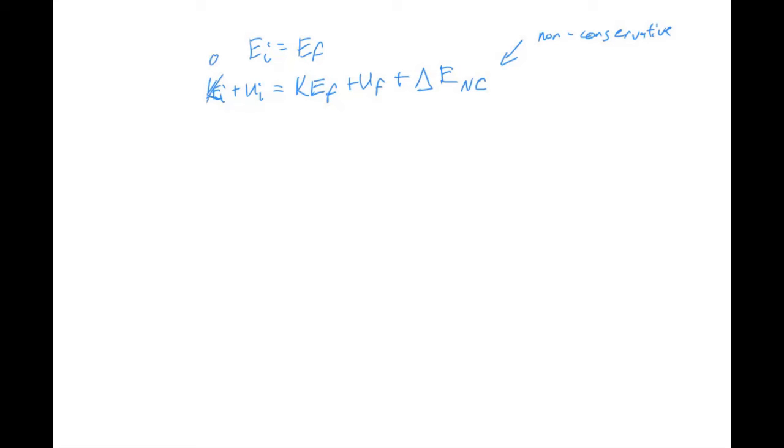And so the setup of all of this is still the same. Your initial kinetic energy was zero. Your final potential energy is zero. You've got mgh initial equals one half mv final squared. So now we're given a final velocity of five. So if we move that kinetic energy term to the other side, now we have the energy loss due to the non-conservative forces by itself.